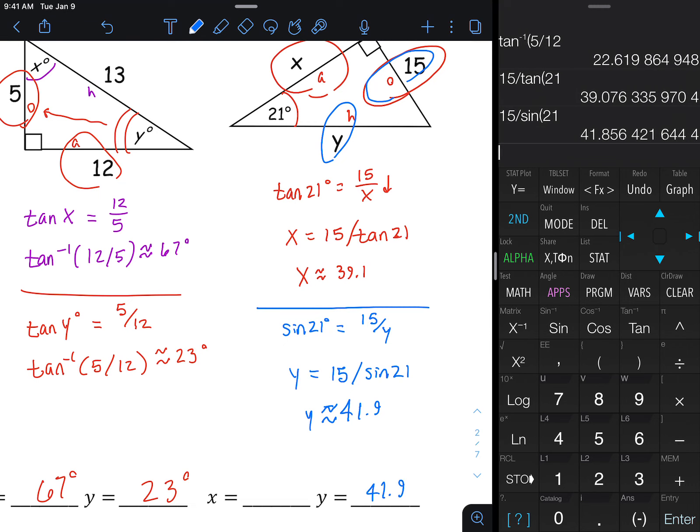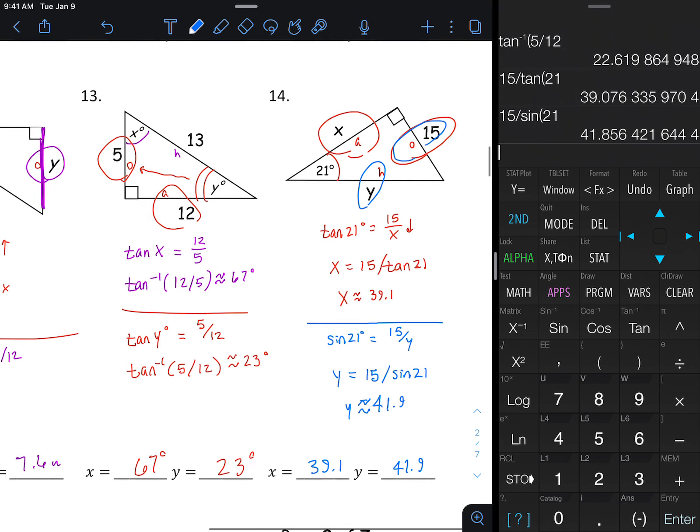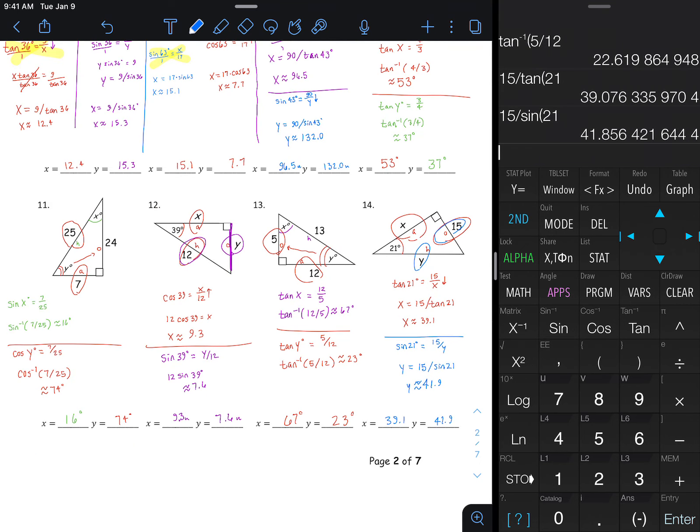That is the hypotenuse, Y is the hypotenuse, and 41.9 is the longer of the two sides we found. 15 is across from the smallest angle, that checks out. The 39.1, that's across from the medium sized angle, that checks out as well.